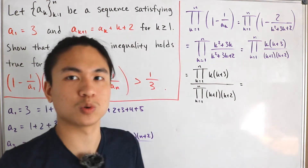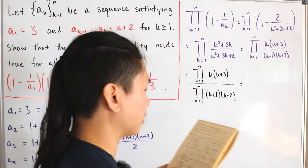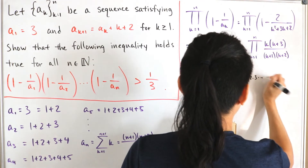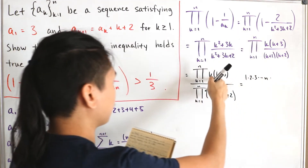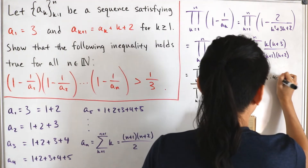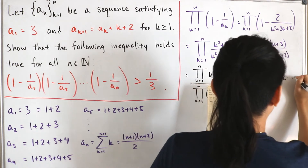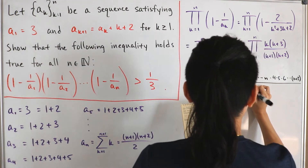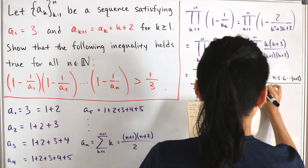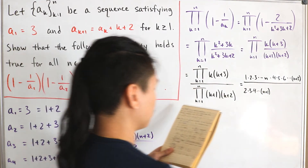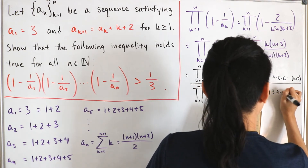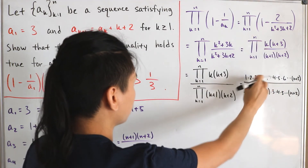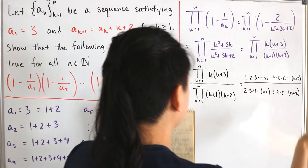The most straightforward method is to expand these products explicitly. The product of k from 1 to n gives 1 times 2 times 3 up to n. The product of k plus 3 from 1 to n starts at 4 and goes to n plus 3. The product of k plus 1 from 1 to n gives 2 times 3 times 4 up to n plus 1. The product of k plus 2 from 1 to n gives 3 times 4 times 5 up to n plus 2. Everything is a product of natural numbers, expressible using factorials.